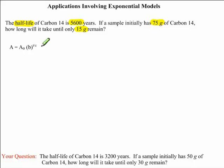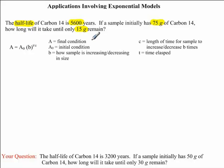The equation we're going to use to help us solve this problem is: A equals A subscript 0 times B to the exponent T divided by C. A is the final condition. A subscript 0 is the initial condition. B represents how the sample is increasing or decreasing in size. C is the length of time for the sample to increase or decrease B times. And T is the time elapsed.